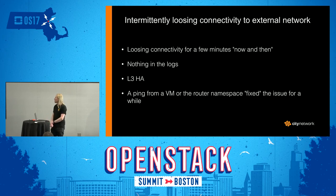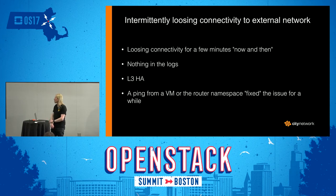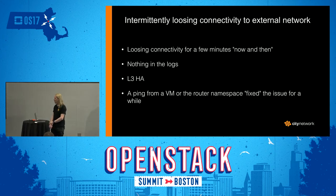Another interesting problem was that we intermittently saw customers losing connectivity to external networks. The report said something like they were losing connectivity for a few minutes now and then. We couldn't find anything in any relevant logs. An important thing here is that we were running L3HA, which will be important in the next slide. Another clue was that a ping from a virtual machine or a router namespace fixed the issue for a while, until it came back the next time.